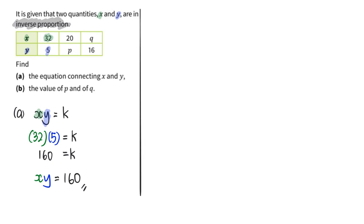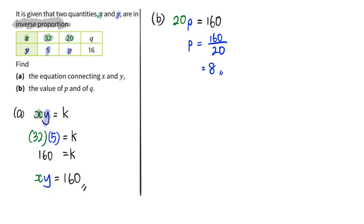Let's move on to part b where we focus on finding values using this equation. For part b, we are given that x equals 20 when y equals p, meaning I just substitute into the equation: x is 20, y is p, and this equals 160. So I can find the value of p easily.